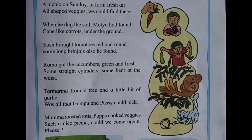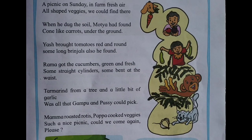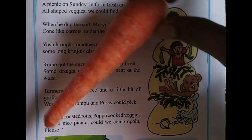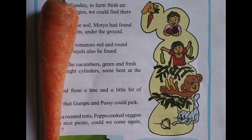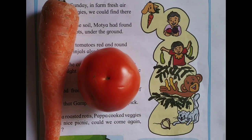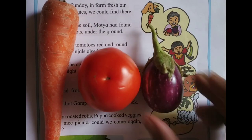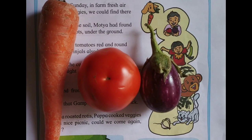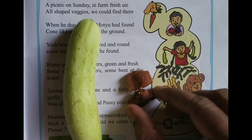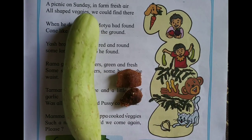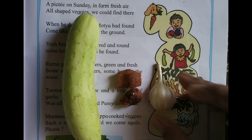Now let us see the names of the vegetables mentioned in this poem. First is carrot, second one is tomato, brinjal, cucumber, this is tamarind — imli bolte hai. This is garlic — lassun.